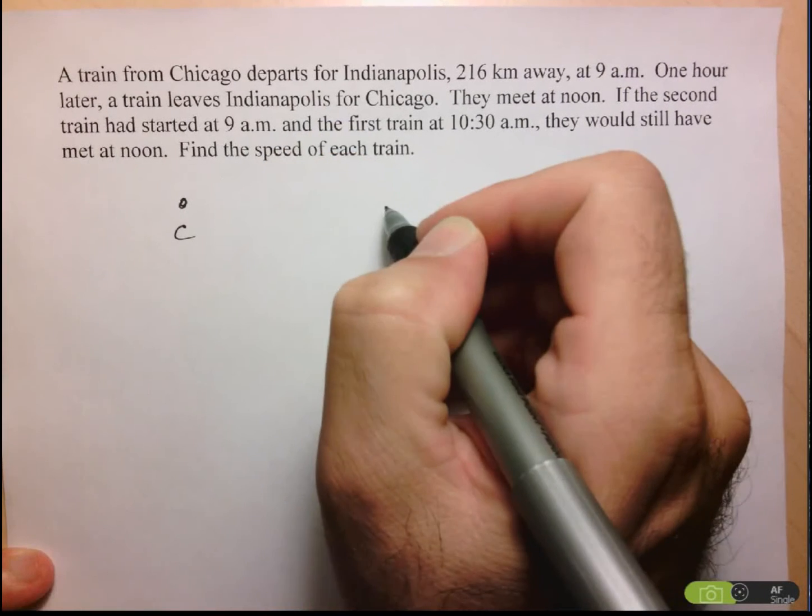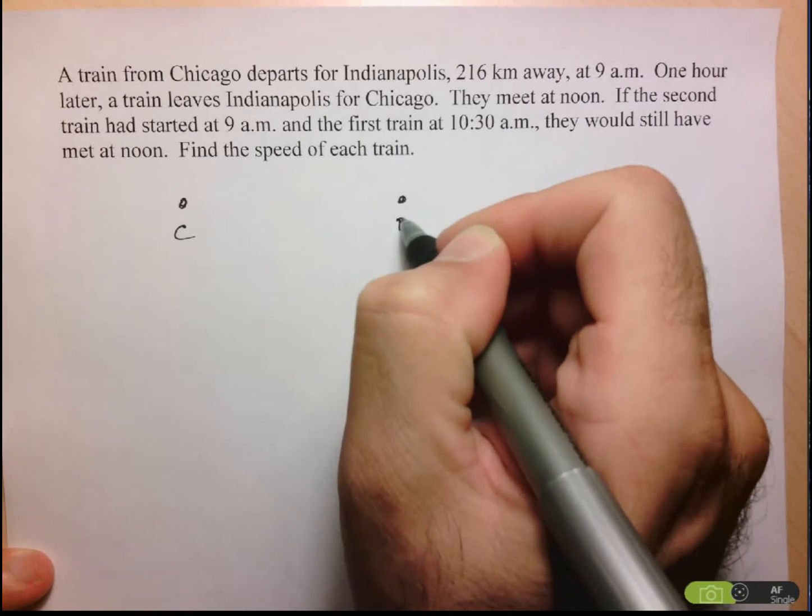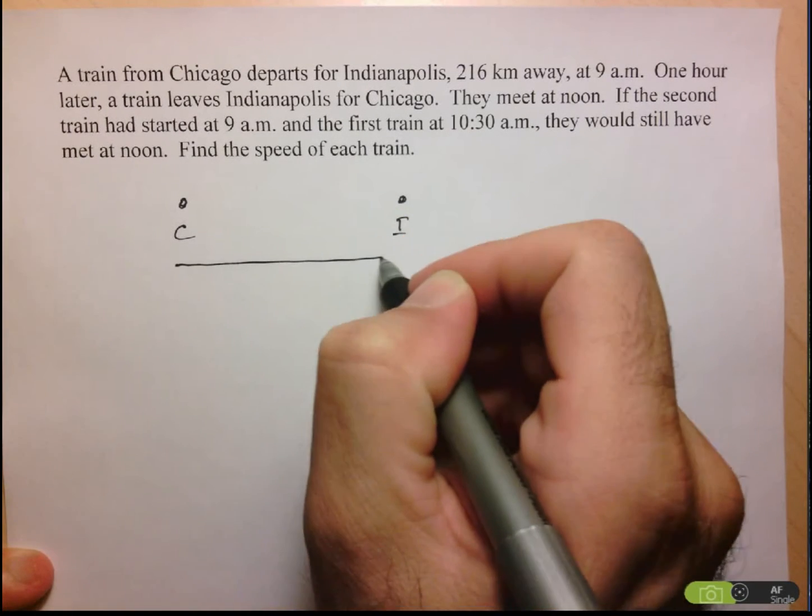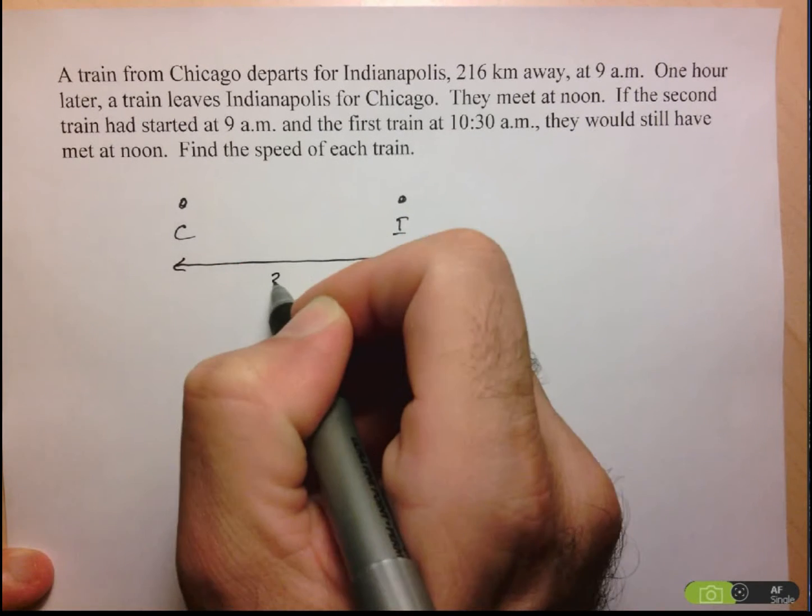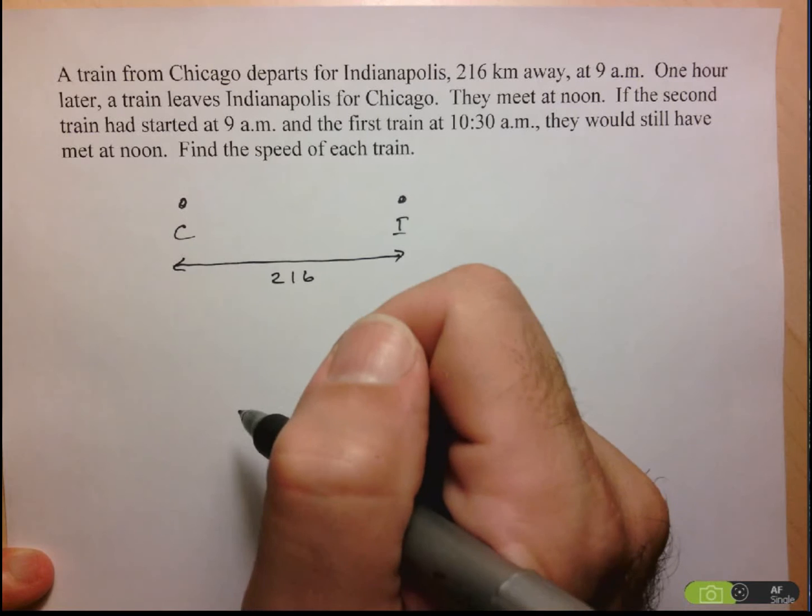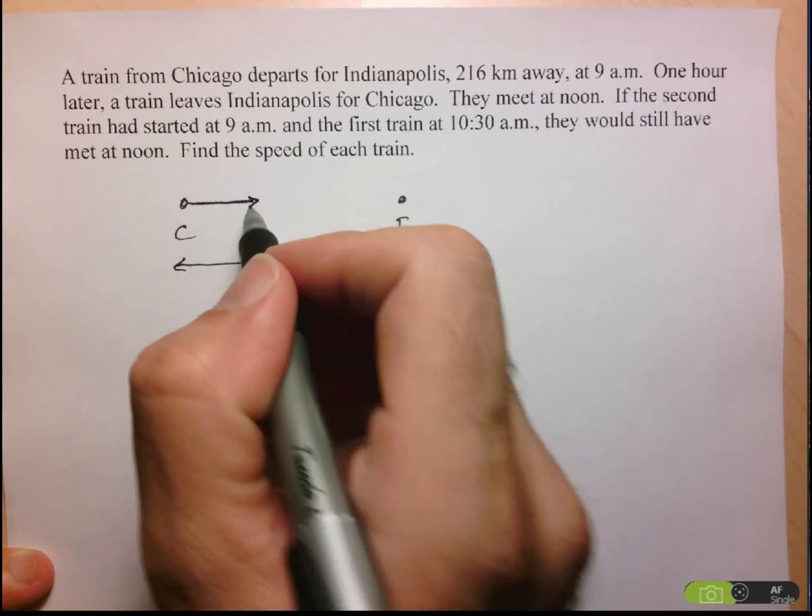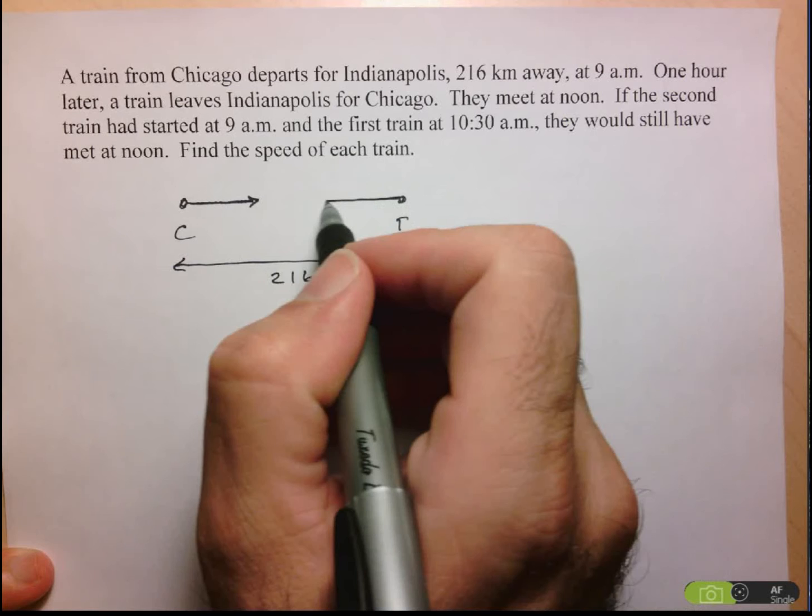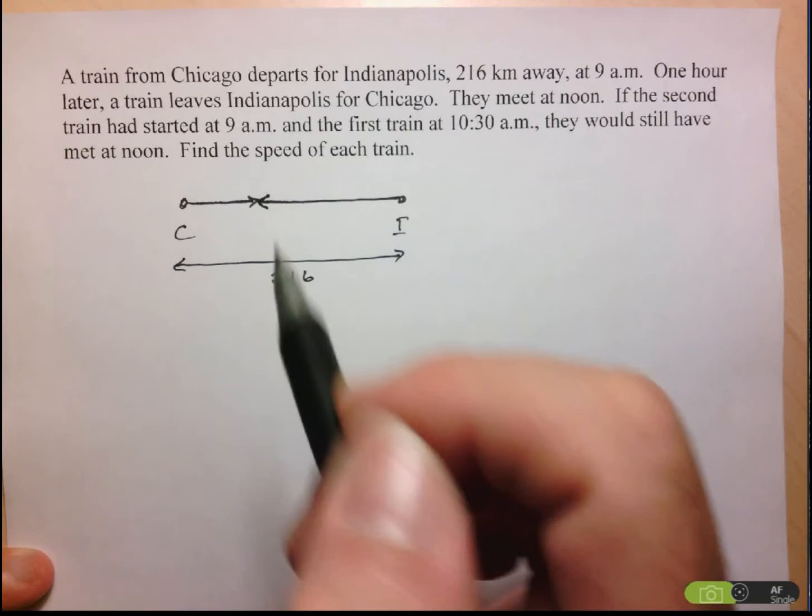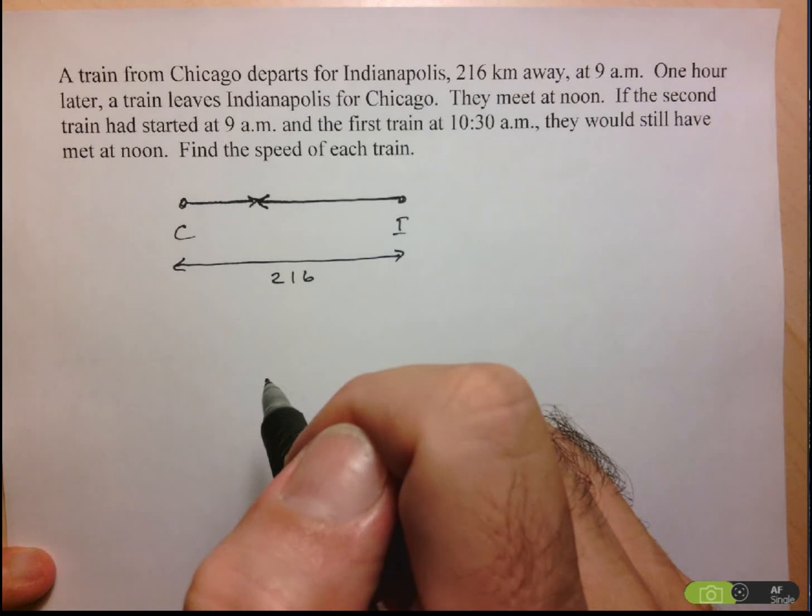So we've got here Chicago, and we've got Indianapolis, and we know the distance between them is 216 kilometers. So we have the train that leaves Chicago and moves along, and eventually another train leaves Indianapolis, moves along, and they meet at a certain point.